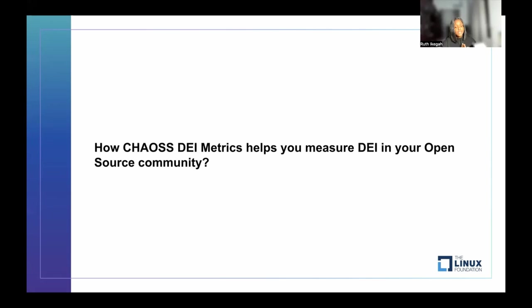The essence of this talk is to share with you the way we look at DEI at the CHAOSS project. And sharing this with you will help you either start off that conversation or even measure how DEI is improving in your open source community or project. In a couple of minutes, I'm going to be sharing how we look at metrics in the DEI working group and how these metrics can help you measure DEI in your own community.